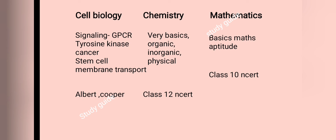Some questions are from chemistry, covering the basics of organic chemistry, inorganic chemistry, and physical chemistry — typically one to two questions each. These chemistry topics can be covered through class 12 NCERT. Some mathematics questions are also asked, but they are very basic, at a class 8 or class 10 level, and are aptitude-type questions.